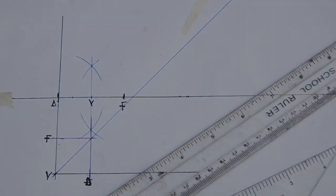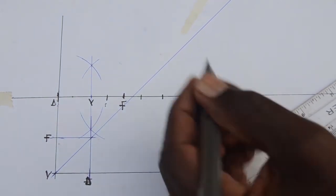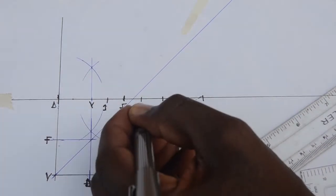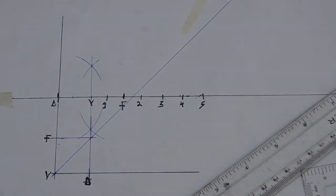Mark off point V. Mark off points along the axis line starting from a point after the vertex, which is point V. These points can have equal distances apart or they may not.